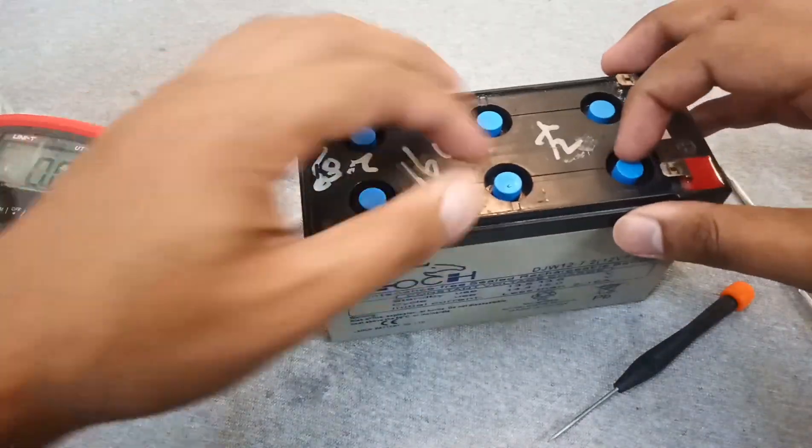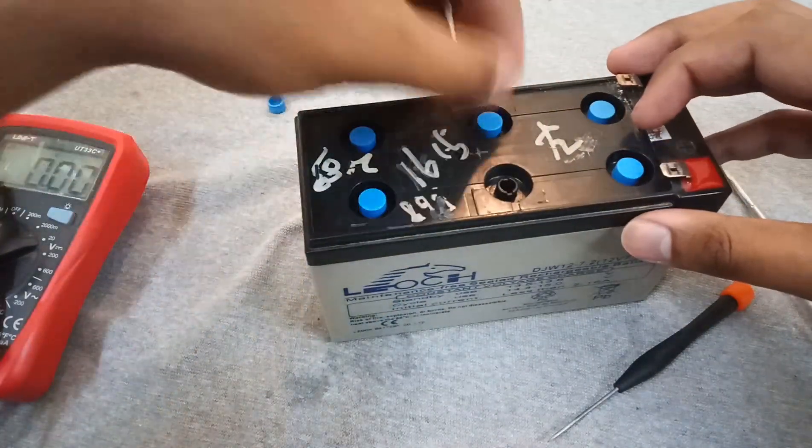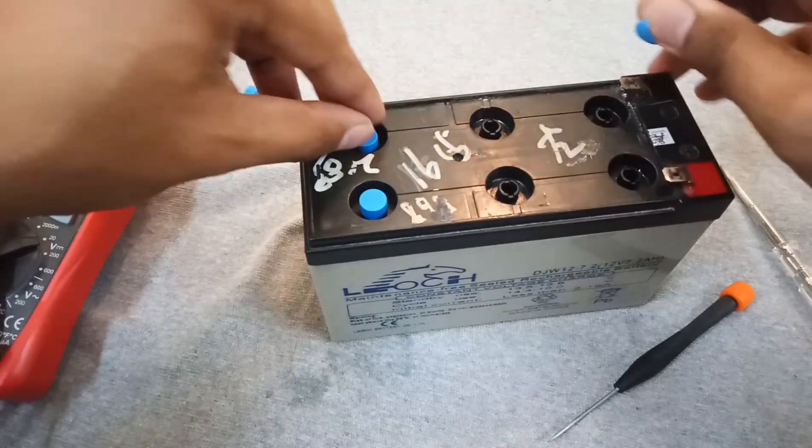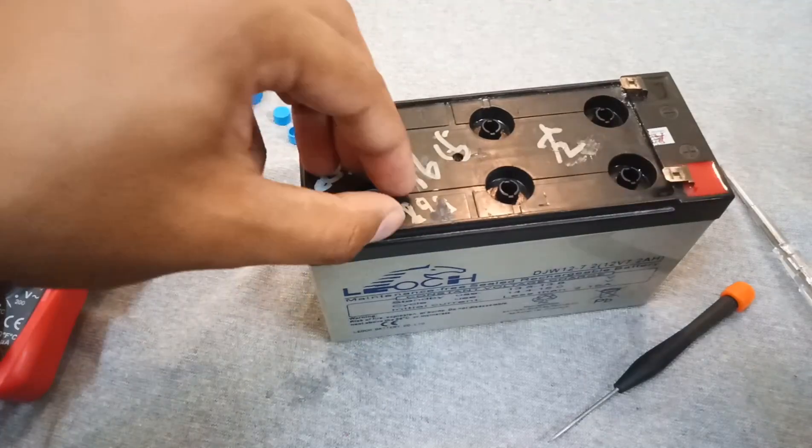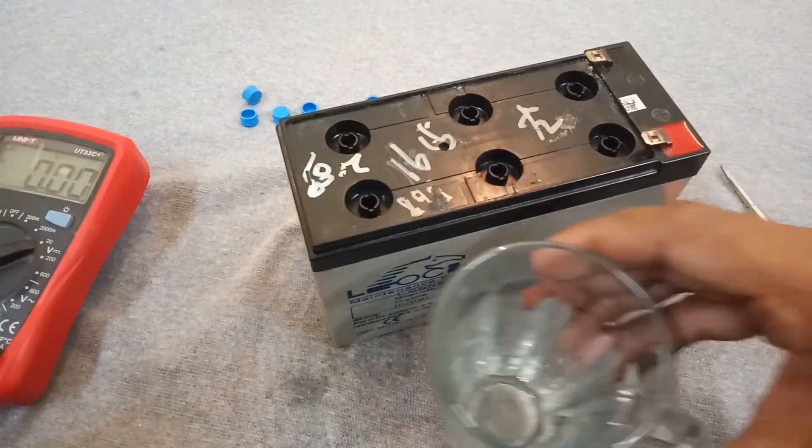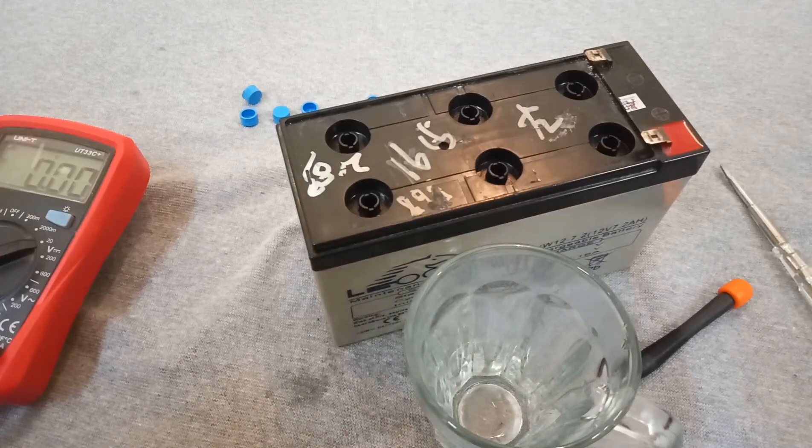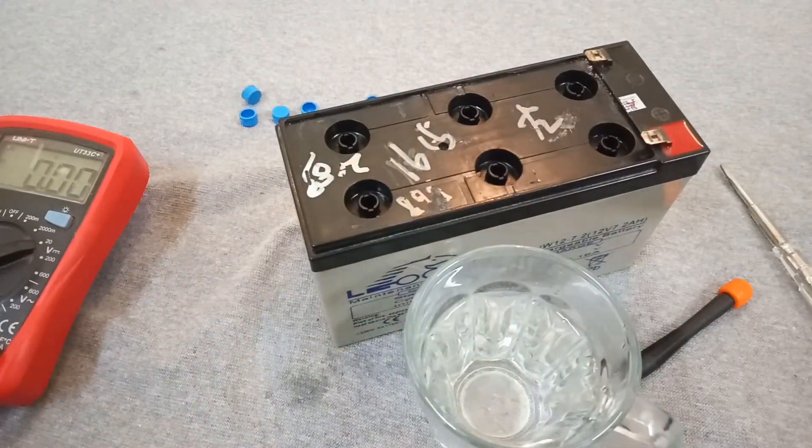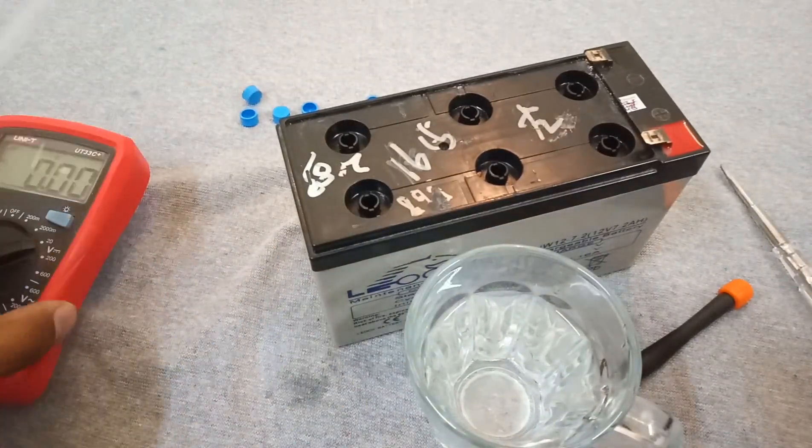So these are the six rubber caps. You have to remove them. I am taking a small amount of distilled water. You can also use this syringe to fill the caps.